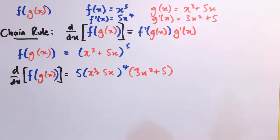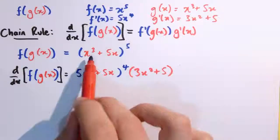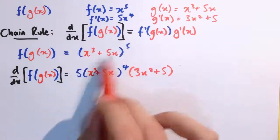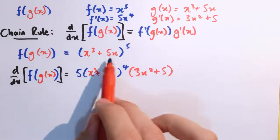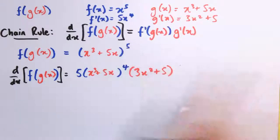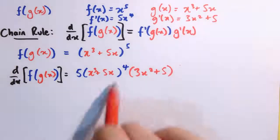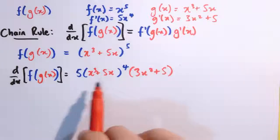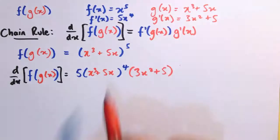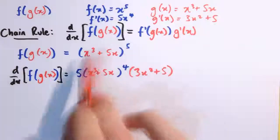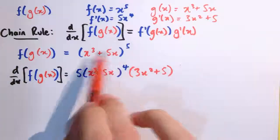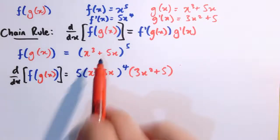This is a function we could have differentiated even without the chain rule — we could in theory have multiplied out x cubed plus 5x to the 5. You could do that to check you get the same thing, but it's very laborious and we'd like to avoid that if possible.